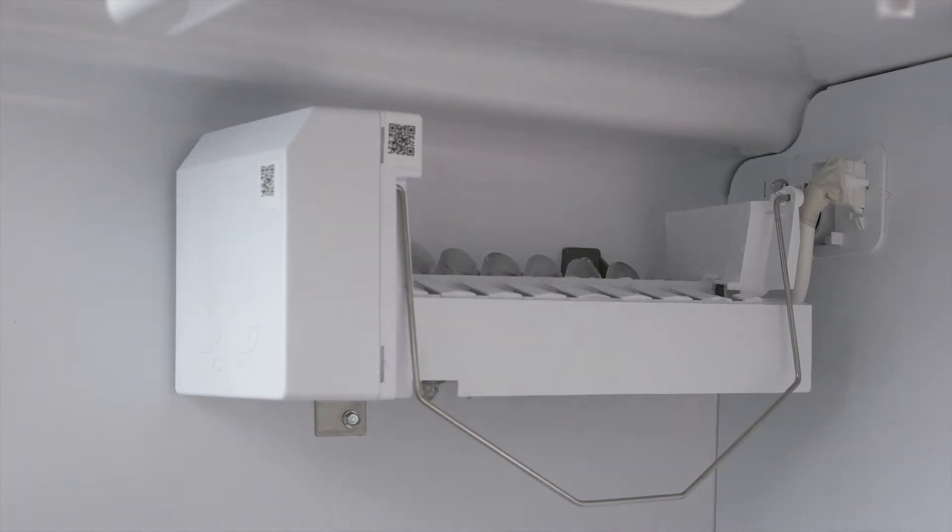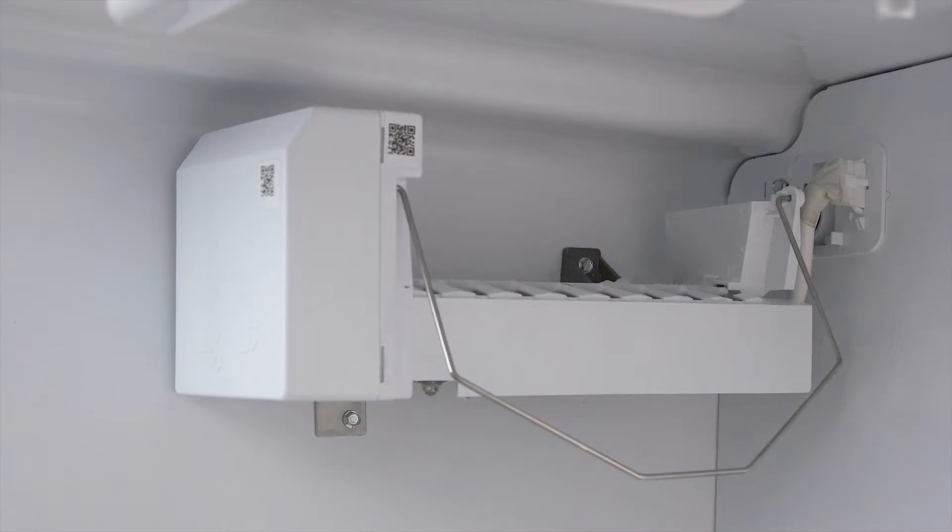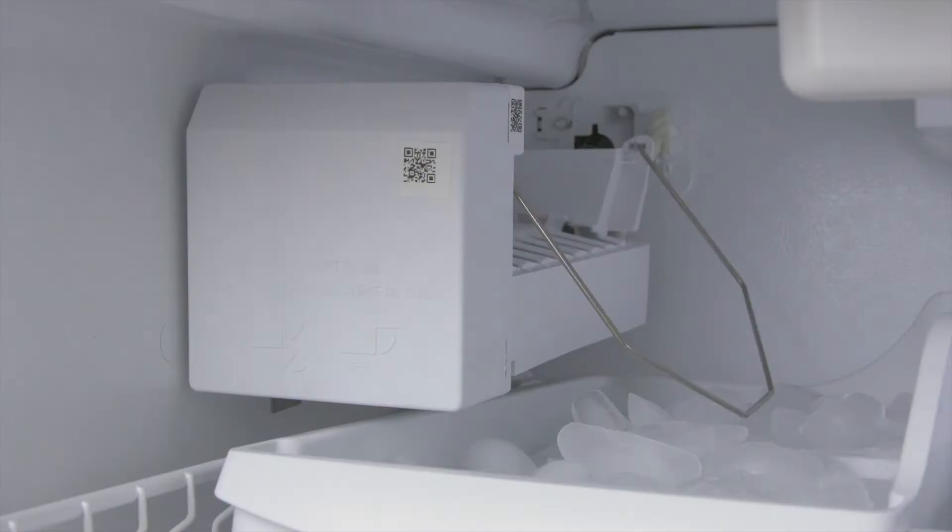The harvesting arm rotates to push the cubes into the ice bucket assembly. The shutoff arm lifts up, the arm lowers, and the process begins again. Now if the bin is full, then the shutoff arm can't lower. It will disconnect power until there is enough room for more ice.